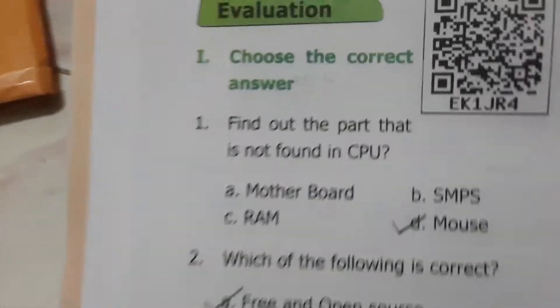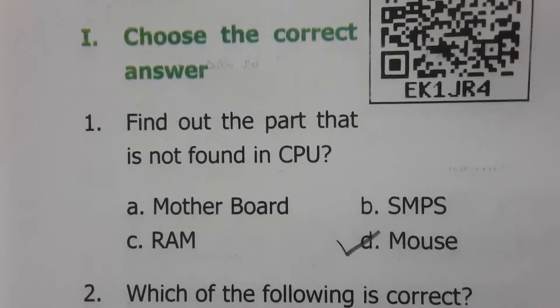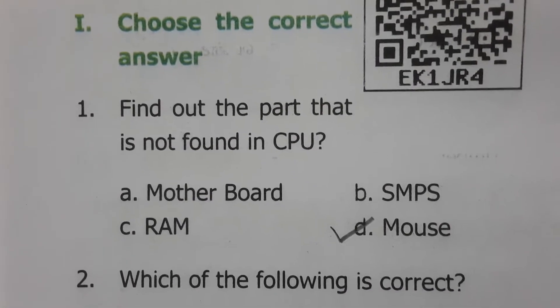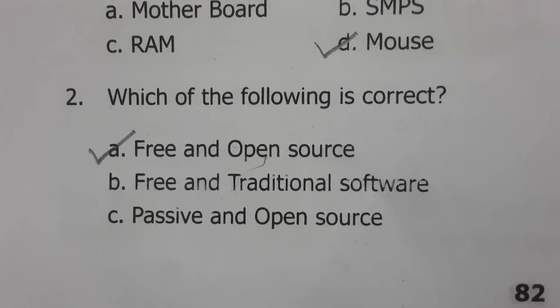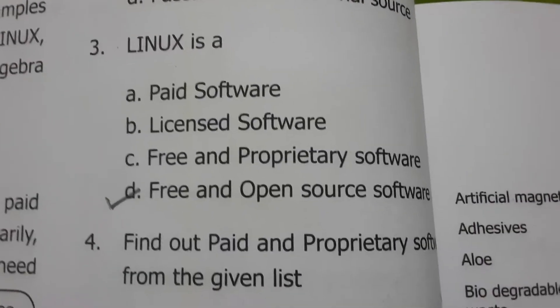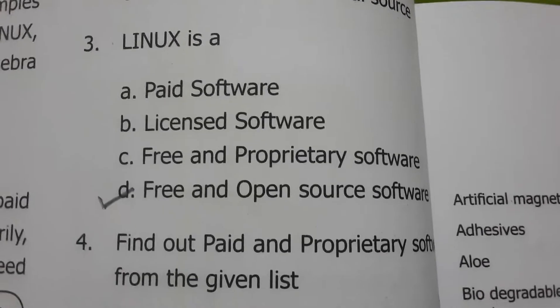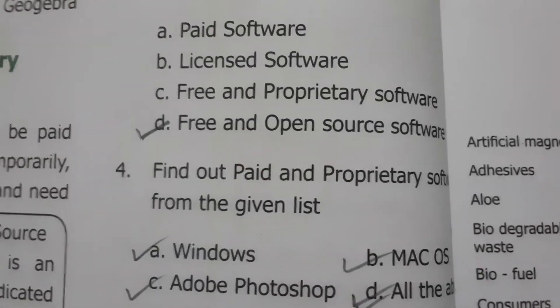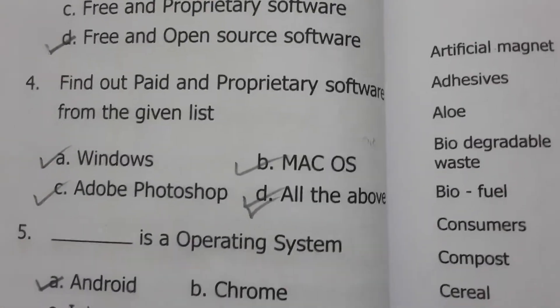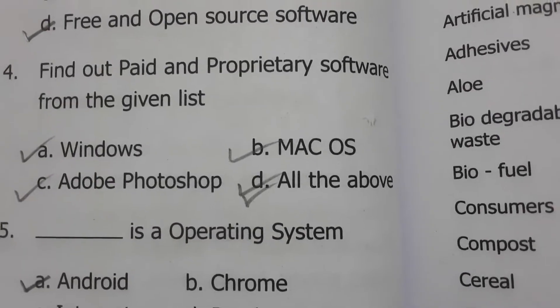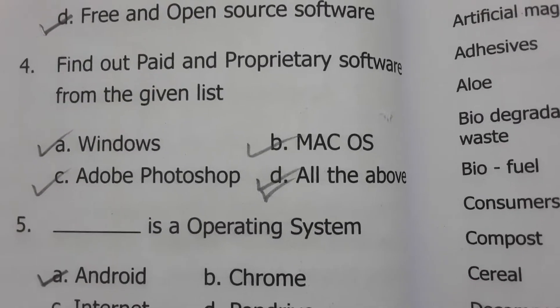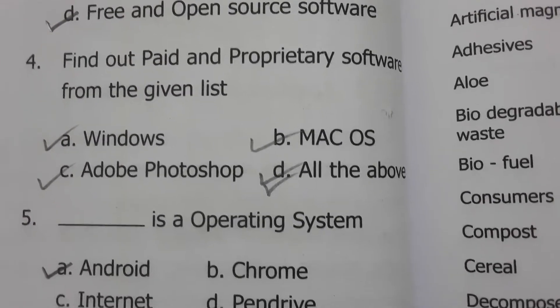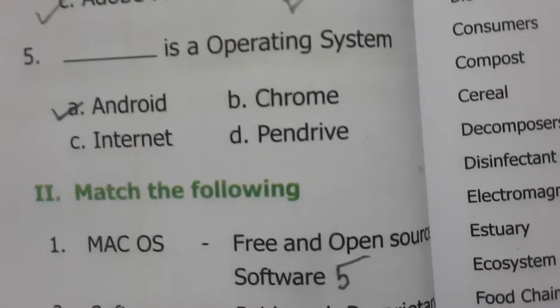Now let's see the bookmark evaluations. Choose the correct answer. Find out the part that is not found in the CPU — the answer is mouse. Which of the following is correct? Linux is a free and open source software. Find out the paid and proprietary software from the given list: Windows, Adobe Photoshop, macOS — all three are proprietary and paid software, so the answer is all of the above.